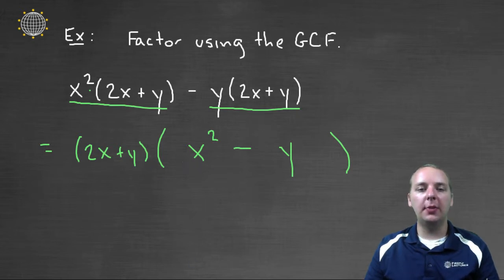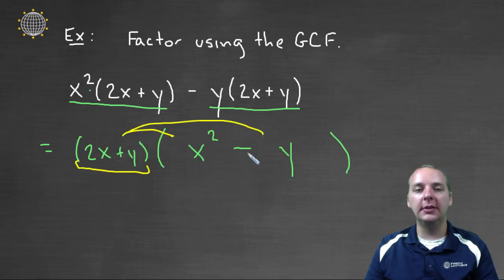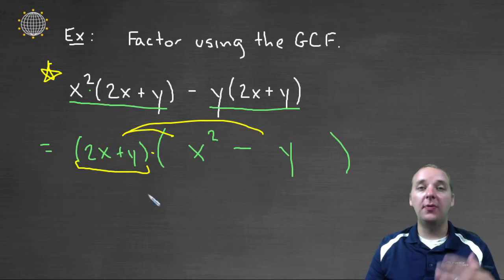And so I know this is correct, because if I suddenly change my mind and I wanted to take this term here and distribute it back through for whatever reason, I would be right back where I started. And so I'm sure that we did in fact factor this guy correctly. So this would be your final answer. We factor this guy using the GCF.